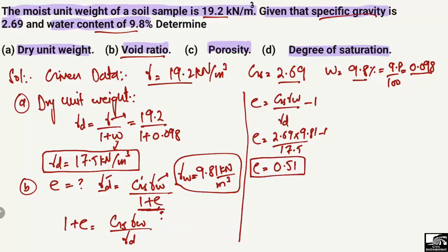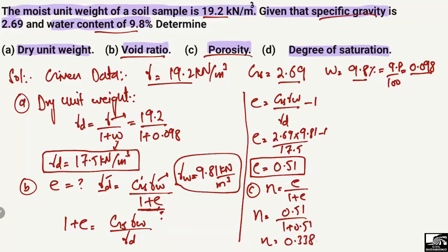The third unknown is the porosity. Porosity is easy to find because it relates to void ratio by the formula: n equals e divided by 1 plus e. Putting in the values, n equals 0.51 divided by 1 plus 0.51, so the porosity for this soil sample is 0.338.